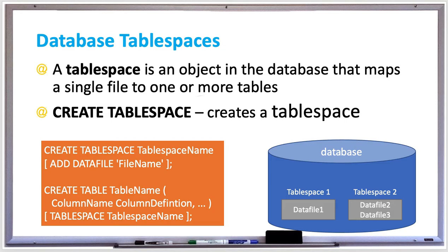Databases typically perform better with a single table per tablespace because concurrent updates of multiple tables is faster if each table is stored in a separate file. As these files get updated, blocks become fragmented across many tracks. Another advantage is that tables can be backed up independently of other tables.